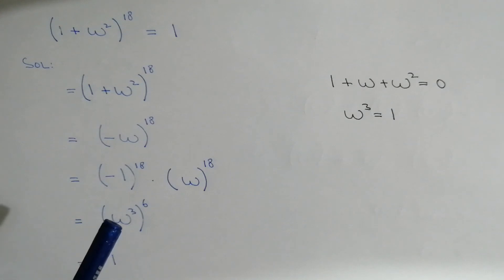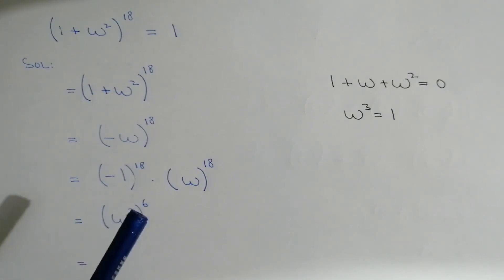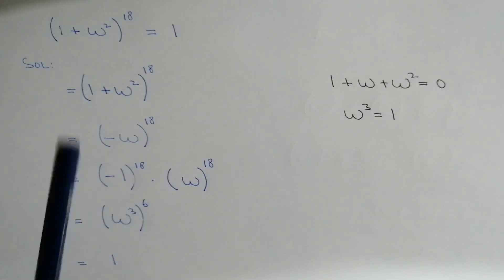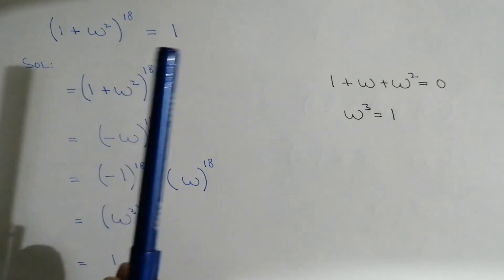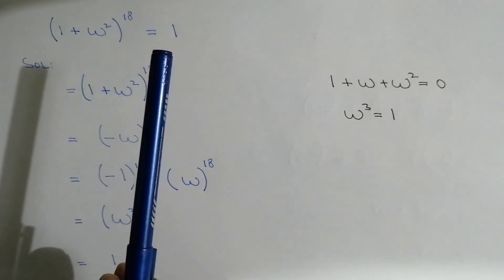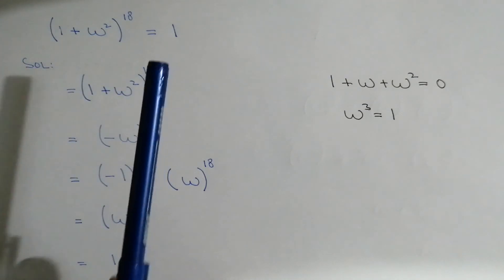Since omega cube is equal to 1, we get 1 power 6, which is equal to 1. So left hand side is equal to right hand side.